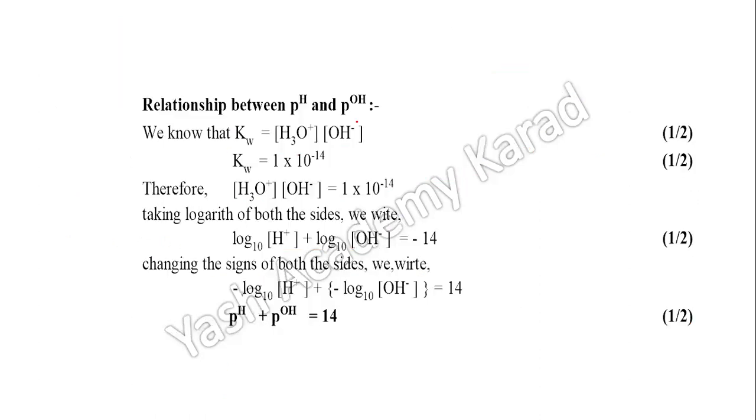Now we have to derive the relationship between pH and pOH. We know that KW, the ionic product of water, equals the active mass of hydronium ion times active mass of OH minus ion. The value of KW is 1 into 10 raised to minus 14. Taking the logarithm of both sides and changing the sign, negative log to the base 10 of H+ ion concentration is pH, and negative logarithm to the base 10 of OH minus ion is pOH. So pH plus pOH equals 14.